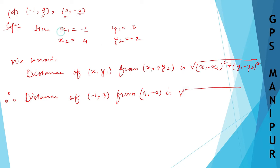So x1 is -1 and x2 is 4. So, (x1 - x2) whole square plus y1, it is 3, minus y2, it is -2, and whole square.